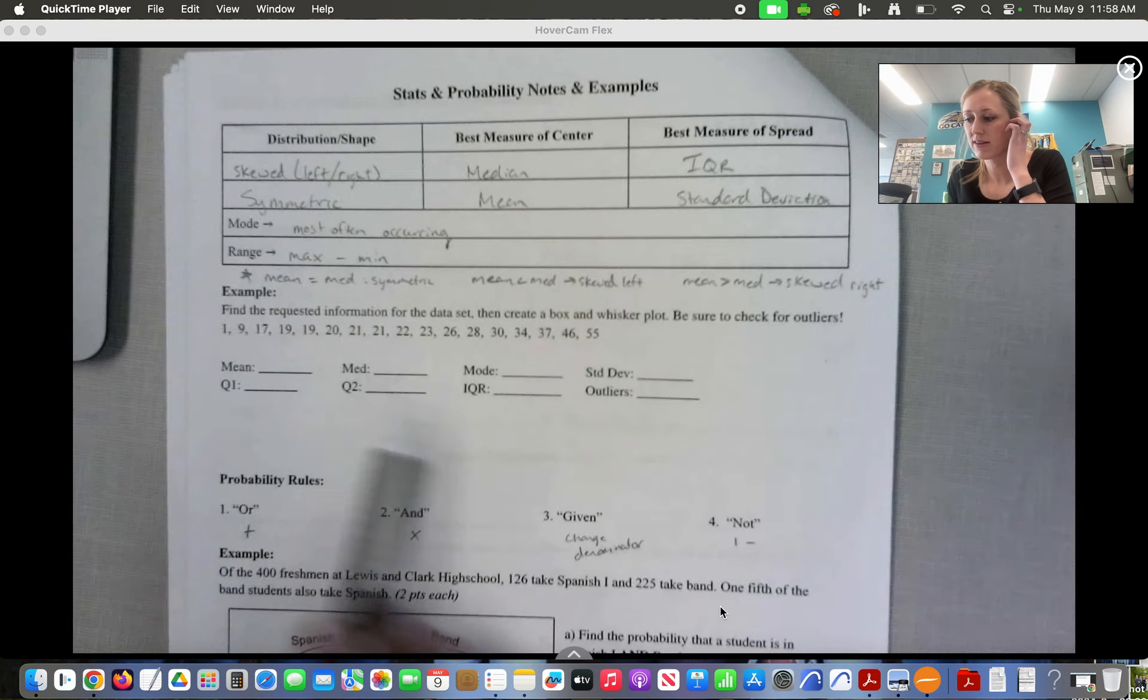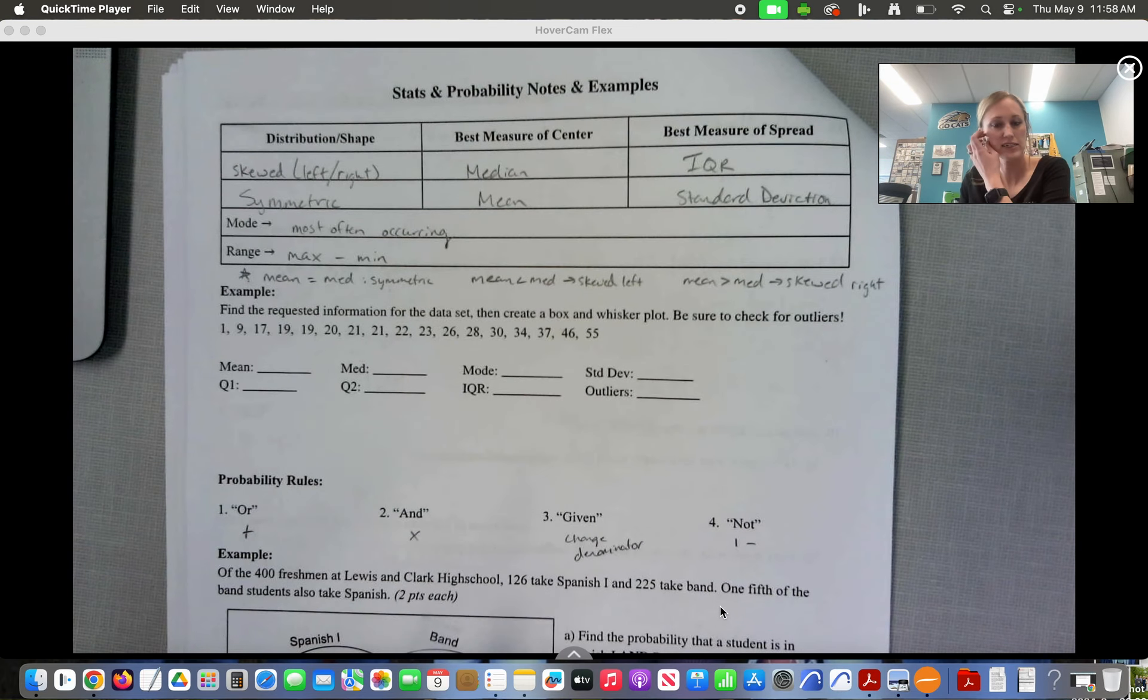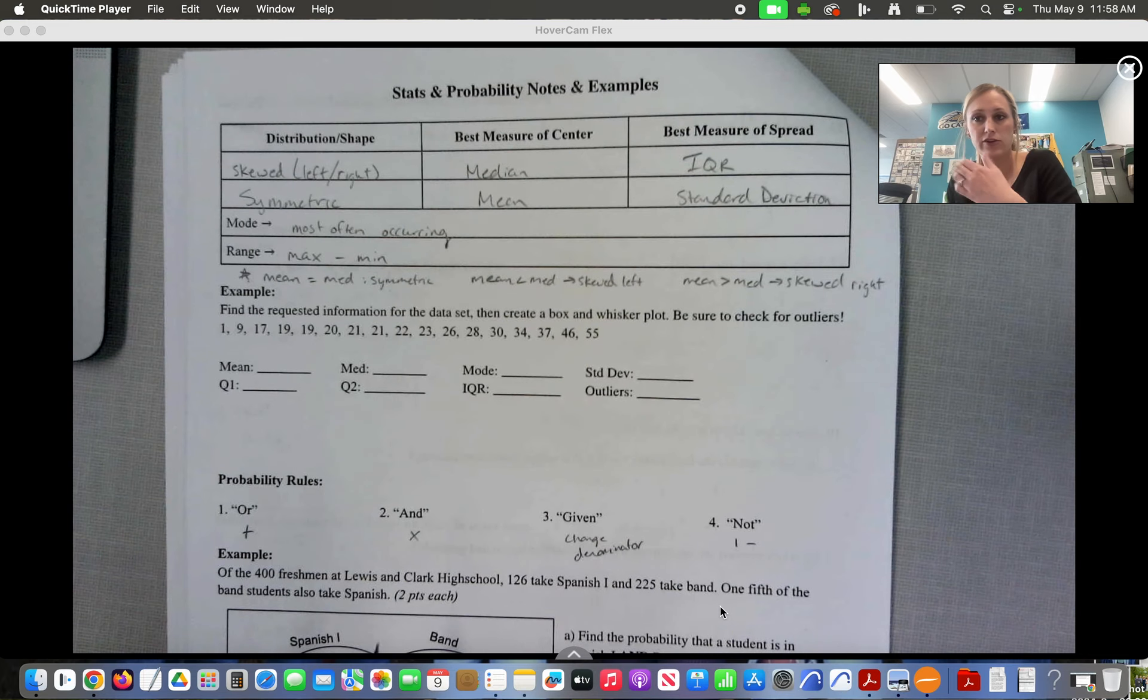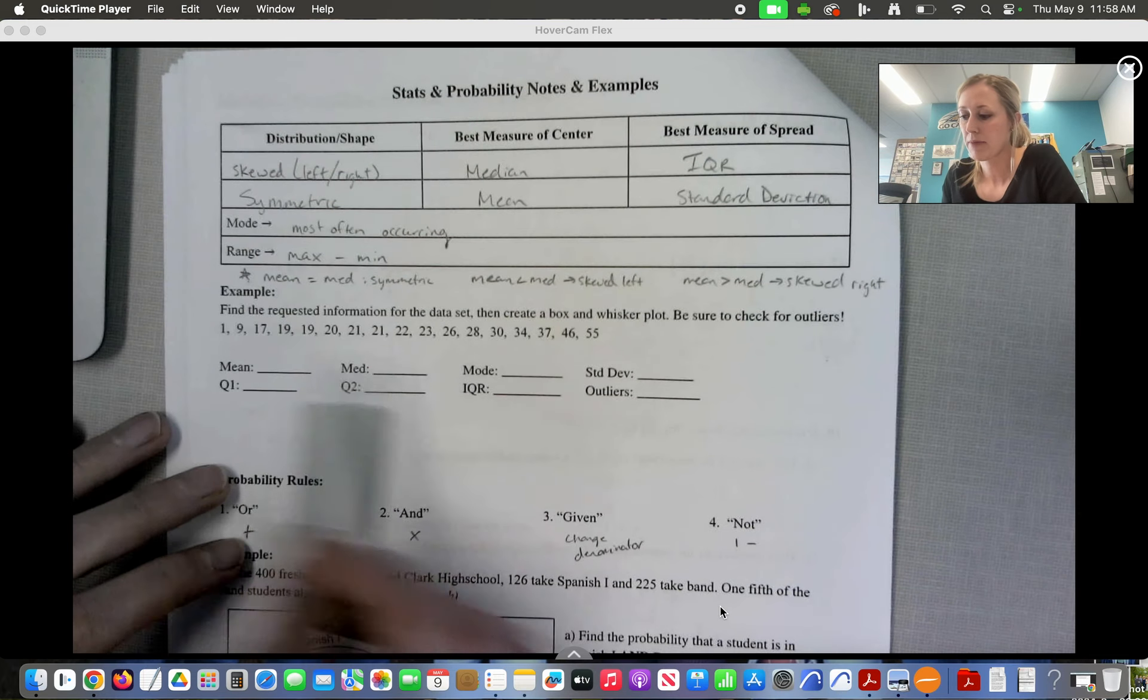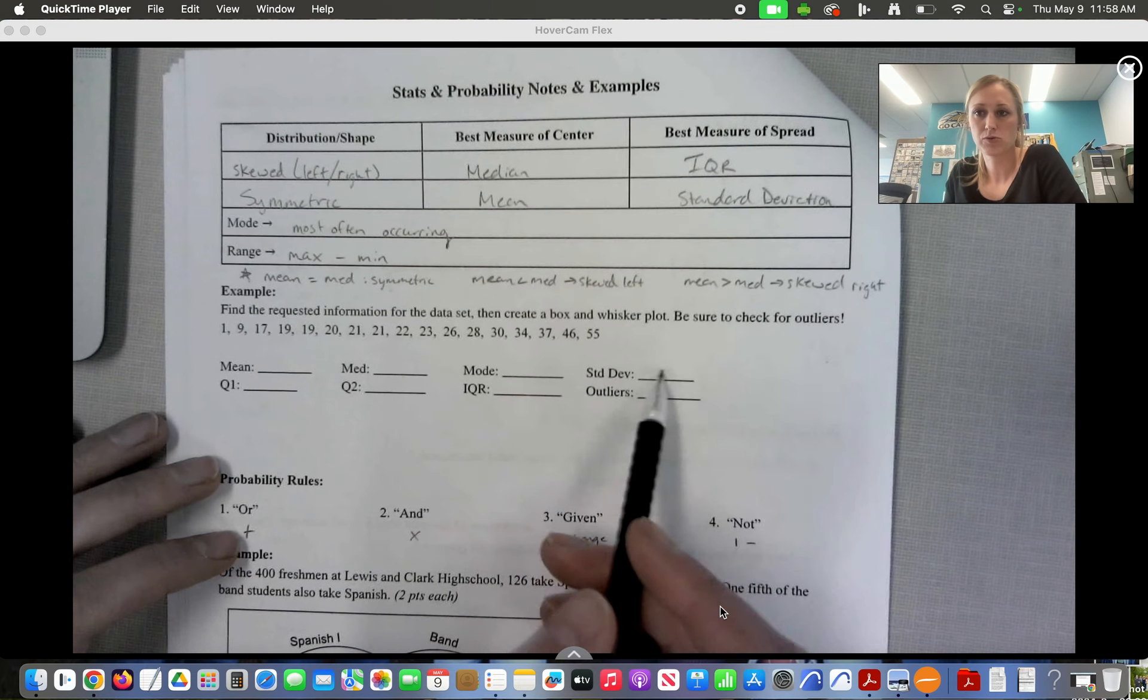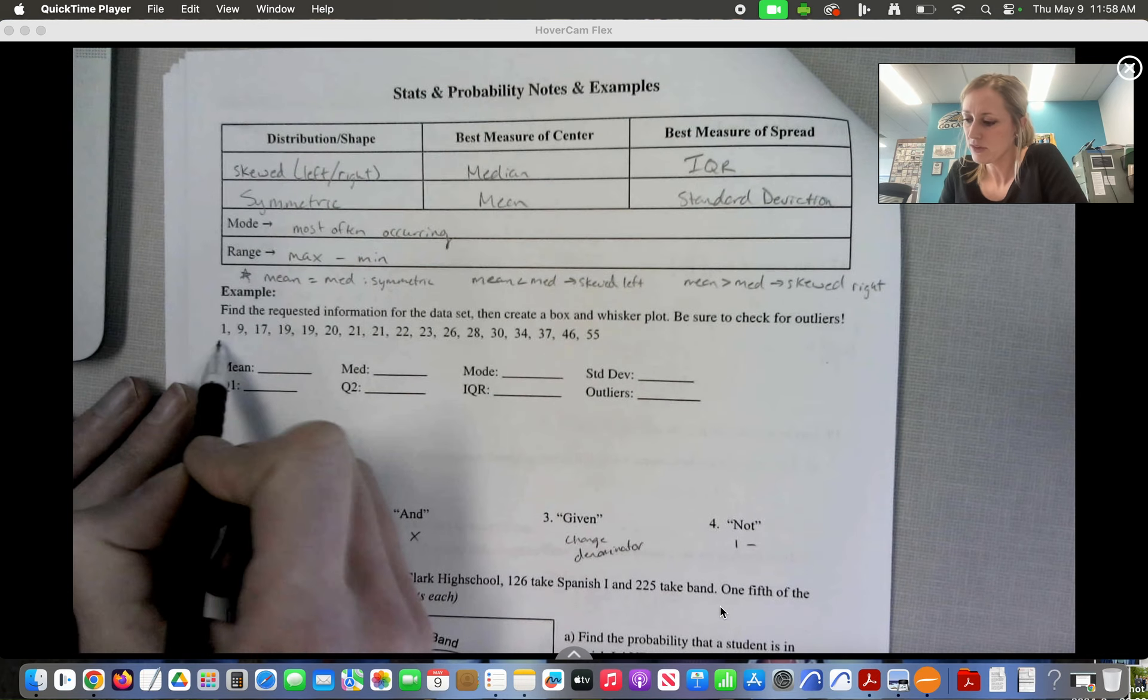So we're going to find this piece of information for this data set. Remember, you can do this by hand or use a calculator. I'm going to do some of this by hand. Standard deviation we're only going to use a calculator. So remember, median is the middle number.